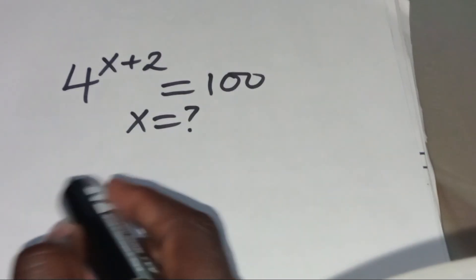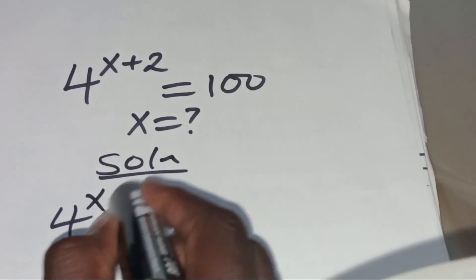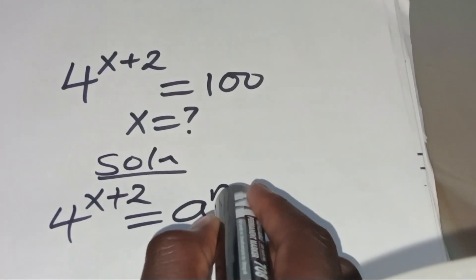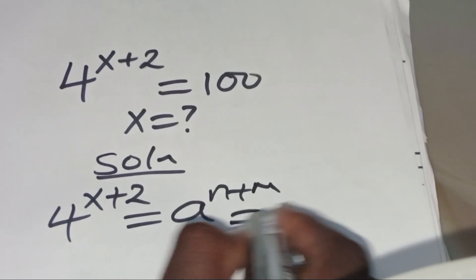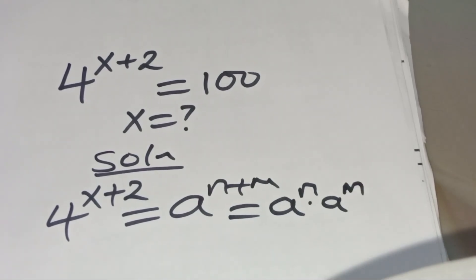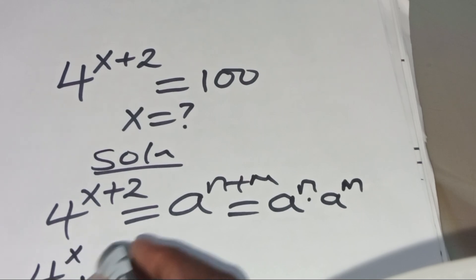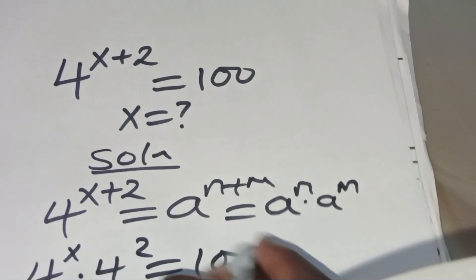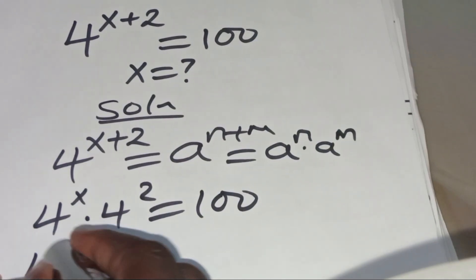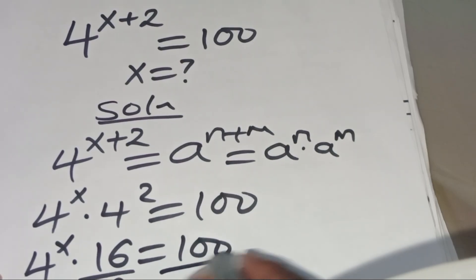So as you can see, the solution to this: 4 to the power x plus 2 is actually in the form of a to the power n plus m, which we can transform as a to the power n multiplied by a to the power m. Now let's apply this property so that we'll have 4 to the power x multiplied by 4 to the power 2, and this is equal to 100.